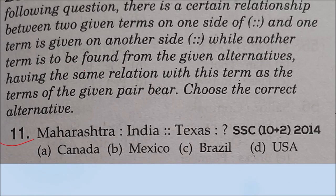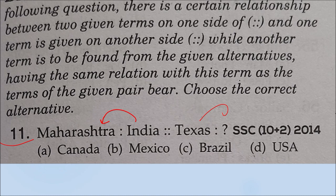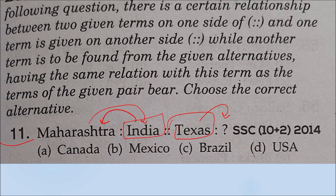Question number 11 is an analogy question. You have to find the relationship between two given terms and apply the same relationship to find the missing term. Maharashtra is a state in India. In the same way, Texas is a state in the USA. So option D is your correct answer.